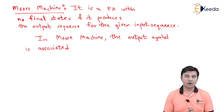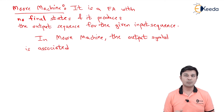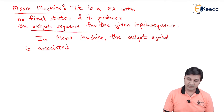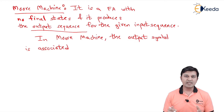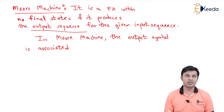For the next two machines — the Moore machine and the Mealy machine — final states are not going to be marked. The machine simply gives us some outputs. In the Moore machine, it is a finite automata which has no final states and it produces an output sequence for the given input sequence. For any given input sequence, this machine throws some output.